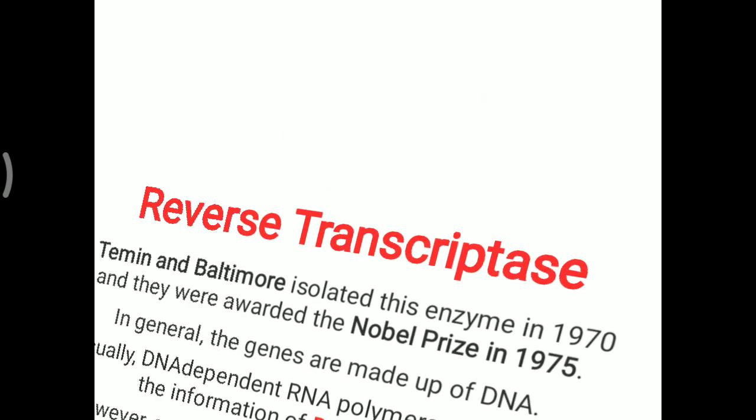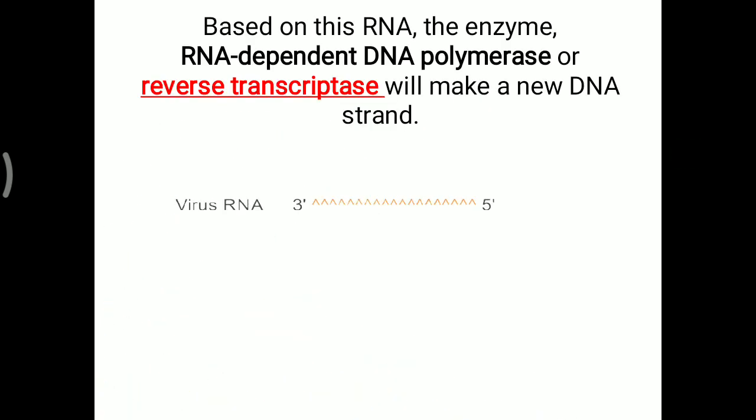Based on this RNA, there is a particular enzyme. The virus RNA is shown running in the direction of 3' to 5'. The enzyme RNA-dependent DNA polymerase — meaning this enzyme depends on RNA and makes a new molecule of DNA — is simply another name for reverse transcriptase, which will make a new DNA strand.